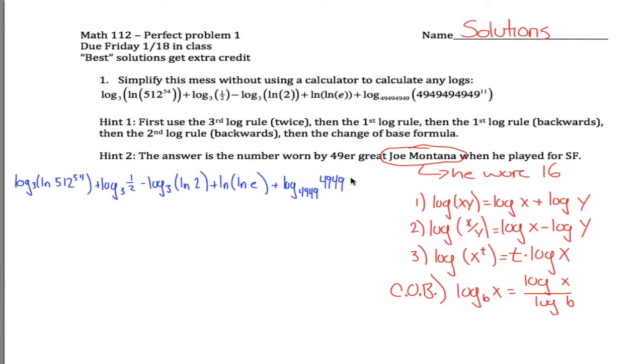So we got log base 3 of the natural log of 2, plus the natural log of the natural log of e, plus the log base of that mess. I don't want to write that mess a bunch of times, maybe I'll just write 49, 49, whatever, good enough. 49 to the 11th power. This really should be 49, 49, 49 however many I have here, but as long as they're the same, it doesn't matter. Alright, anyways, use the third log rule twice. Here's my third log rule. It says if you have an exponent, you can bring it down in front. So where do I have exponents? Right here, and right here.